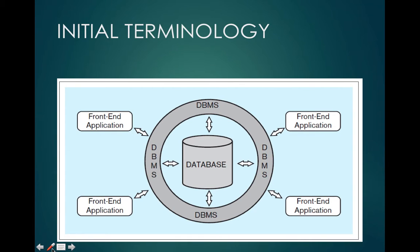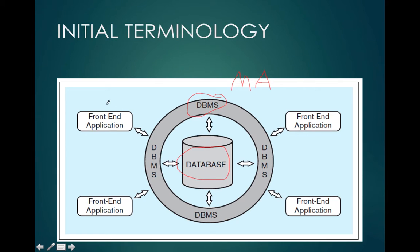Here's a good example of a database system diagram. At the core is the database — this is where all the information is stored. The database management system sits around it — let's say Microsoft Access. Then you have your front-end application, which represents the user accessing Microsoft Access to retrieve the information stored in the database.